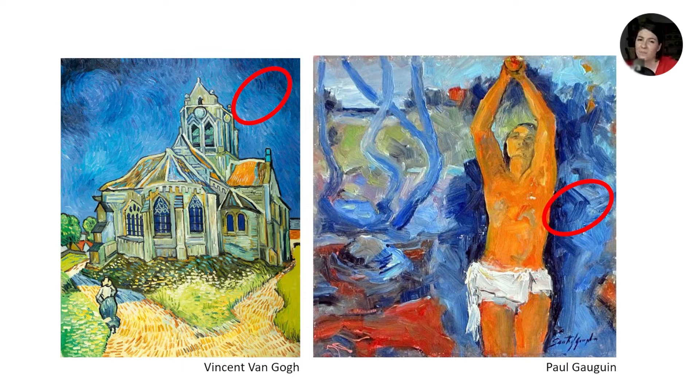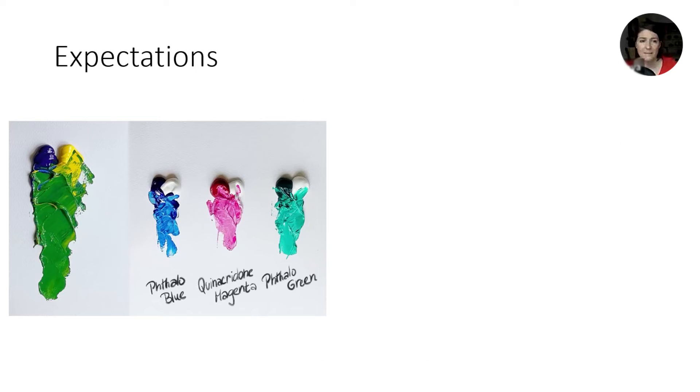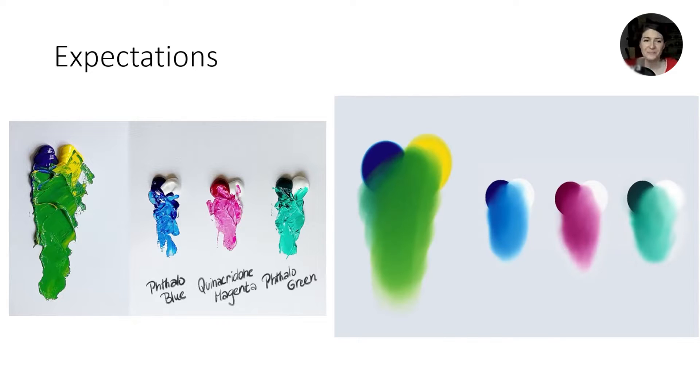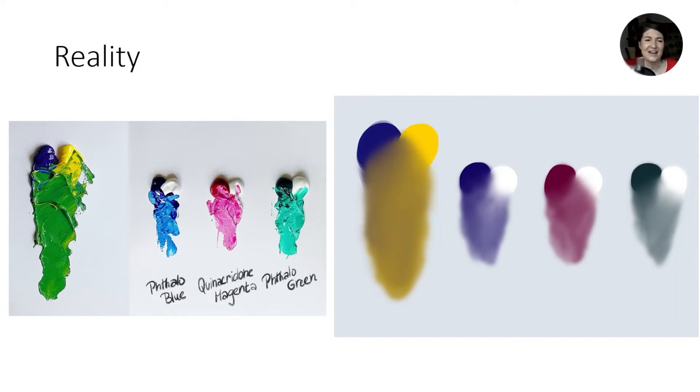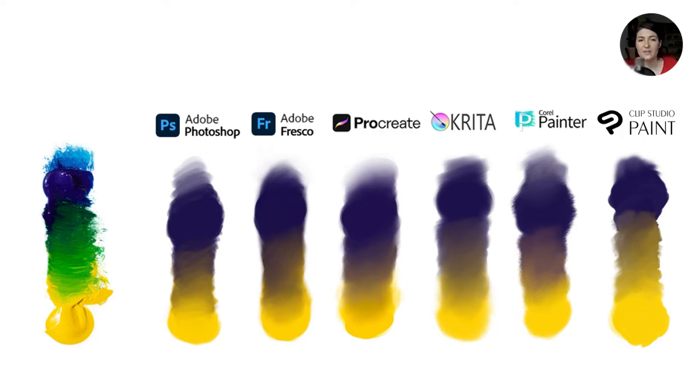And we can see these gradients in practically every physical painting, because this is the way paints behave. So we might expect color in painting software to behave the same way, right? Something like this. Well, they don't. None of the widely used professional painting software treats colors as pigments.